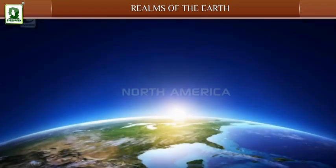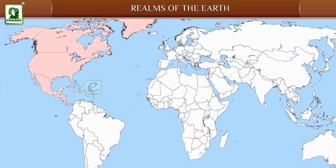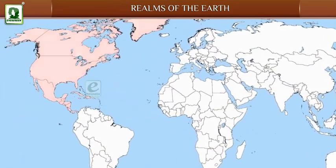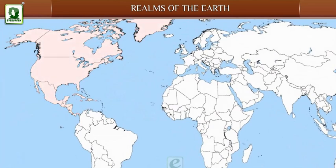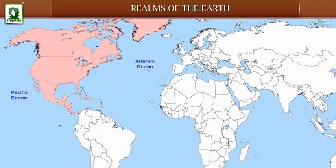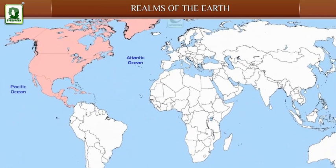North America: North America is the third largest continent with respect to area. It shares its borders with the Atlantic Ocean to the east and the Pacific Ocean to the west. It lies completely in the western and northern hemisphere.